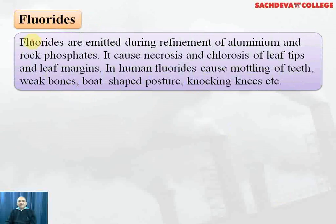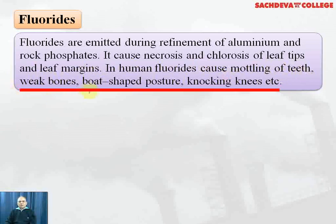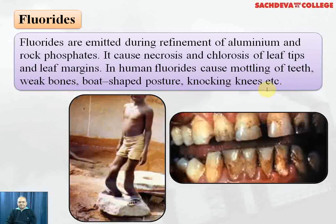Fluorides are emitted during refinement of aluminium and rock phosphates. They cause necrosis, which is the persistent infection leading to death, and chlorosis of the leaf tips and leaf margins. In humans, fluorides cause mottling of teeth, weak bones, boat-shaped posture and knocking knees. You can see here the effect of fluorides on the teeth and on human beings.